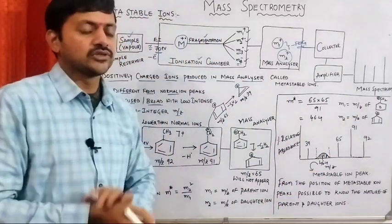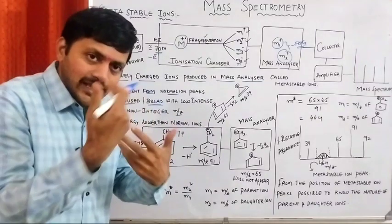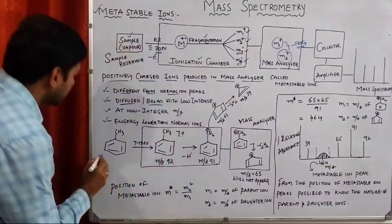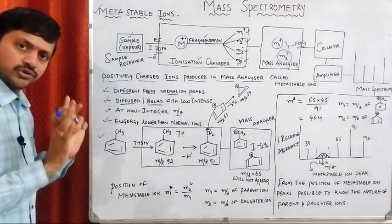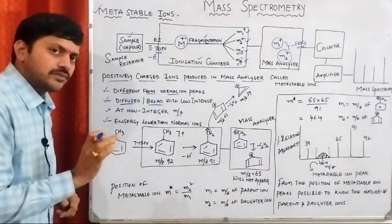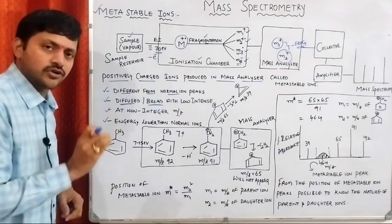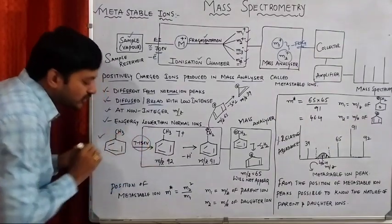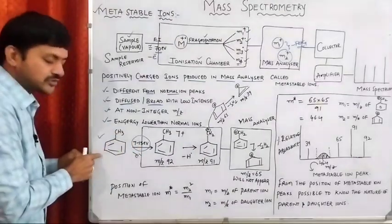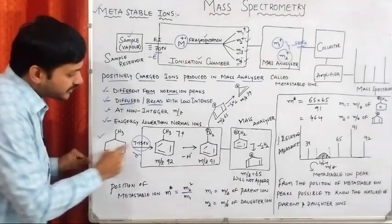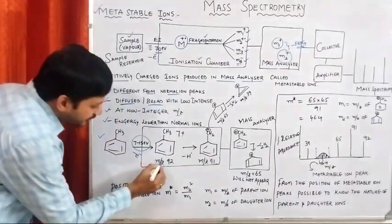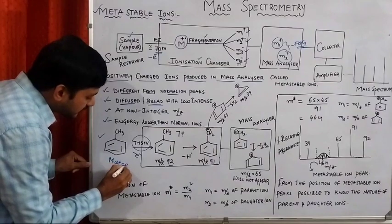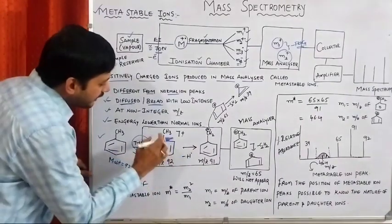Let's take an example to understand how metastable ions are generated. Consider toluene, which contains a carbon-carbon single bond and a carbon-carbon pi bond. By supplying energy, we remove an electron from the pi bond, generating the molecular ion. The m/z of the molecular ion is 92, meaning the molecular weight of toluene is 92.